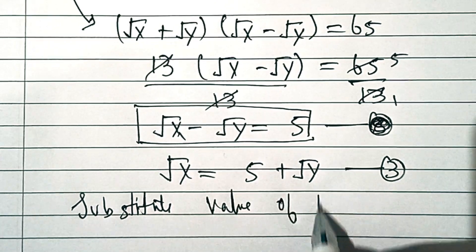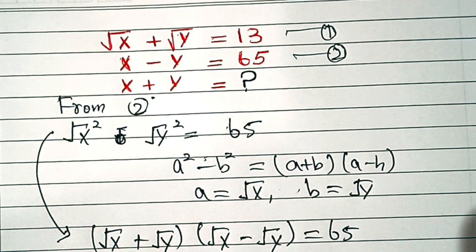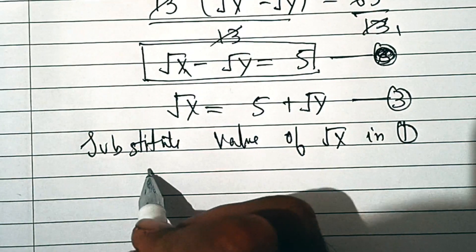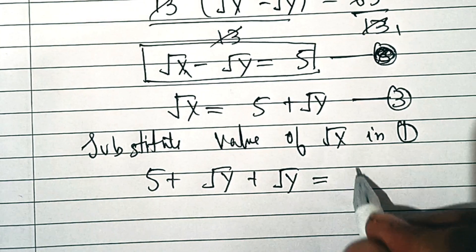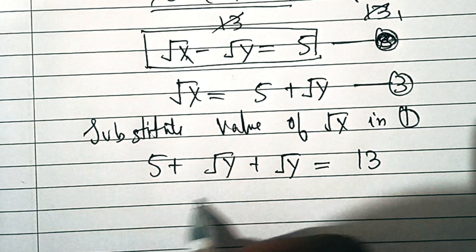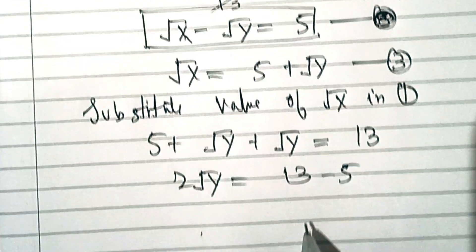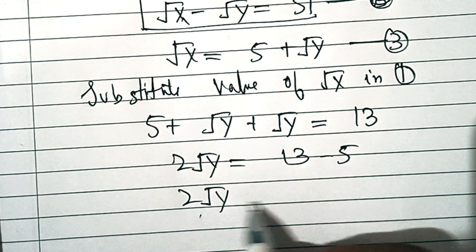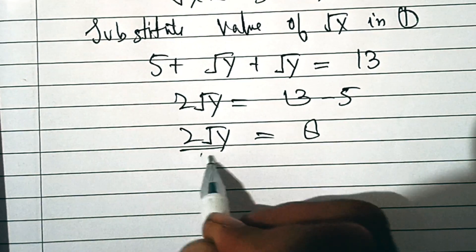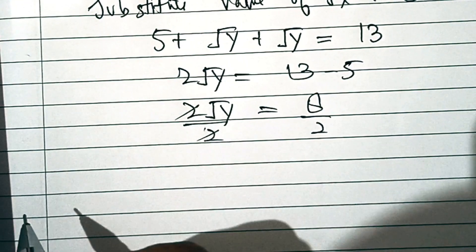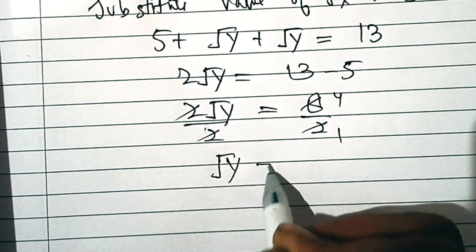Now substitute the value of √x from Equation 3 into Equation 1. We get (5 + √y) + √y = 13, that is 2√y = 13 − 5. So 2√y = 8. Divide both sides by 2; the 2s cancel out and we have √y = 4.